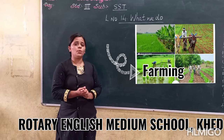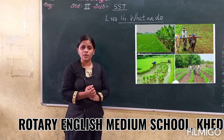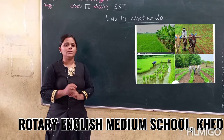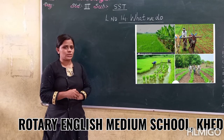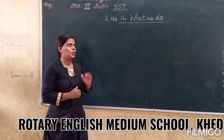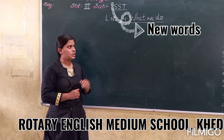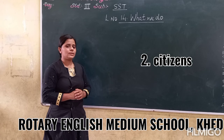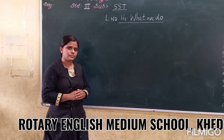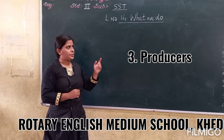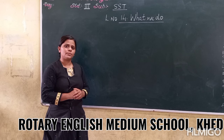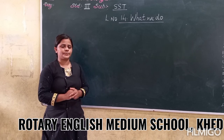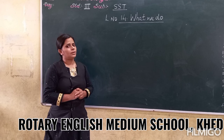I hope you all have understood about farming. You have to read the textbook and underline the new words. Note down the following new words: first, occupation; second, citizen; third, producer; and fourth, output. Thank you.